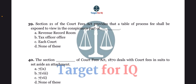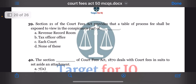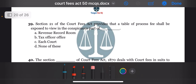Next question: section 21 of the act provides that a table of process fee shall be exposed to view in the conspicuous part of dash. The options are A. Revenue record room, B. Tax officer office, C. Each court, or D. None of these. The correct answer is option C. Each court.